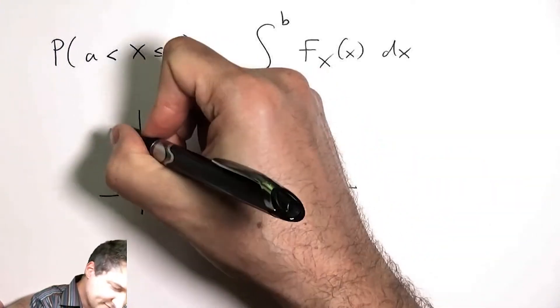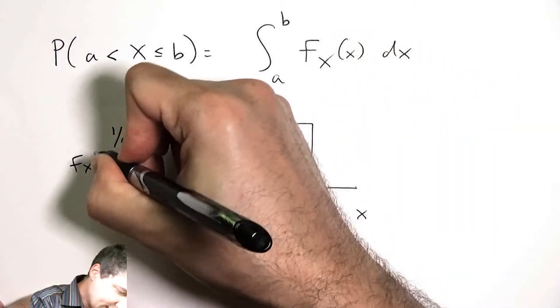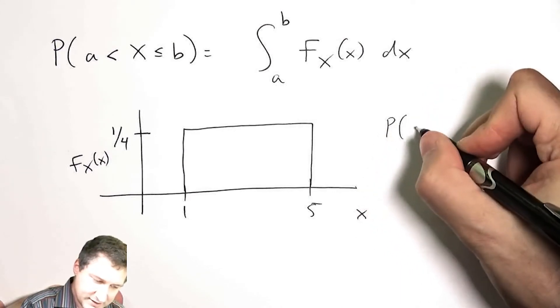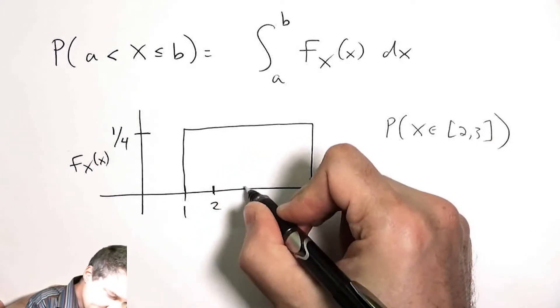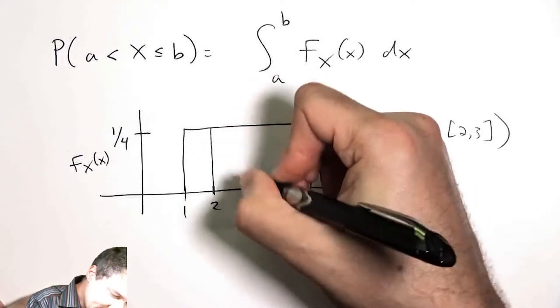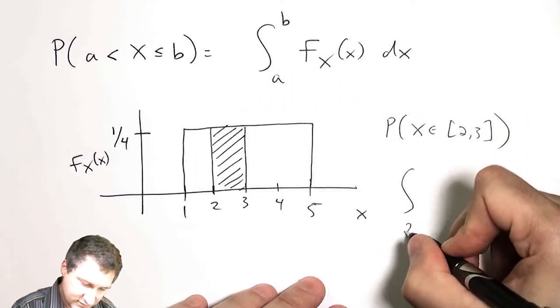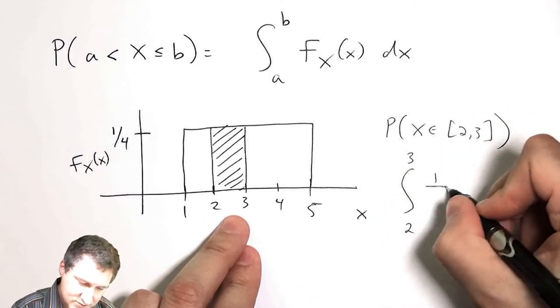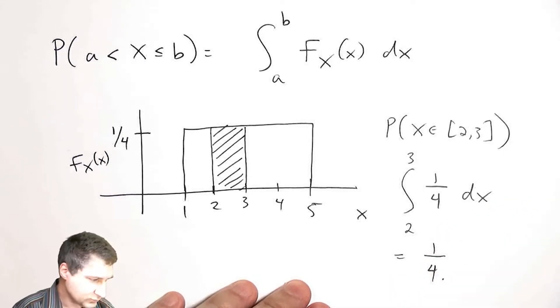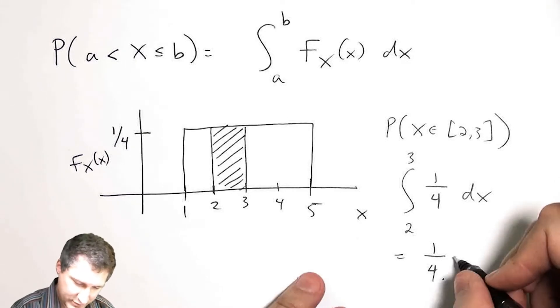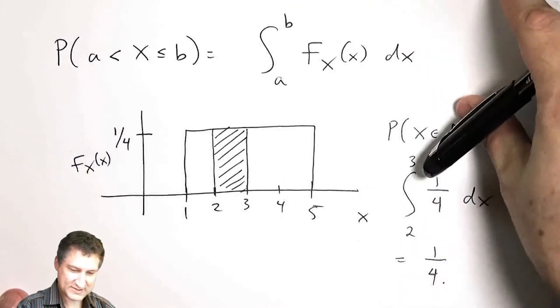For example, suppose I have a uniform random variable between 1 and 5. This is going to be the PDF. Now I ask, what is the probability that my random variable falls between 2 and 3? I would label 2 and 3, and it's taking the area under the PDF. That's the integral from 2 to 3 of the PDF, which is 1/4 dx, which is just equal to 1/4 in this case, 1/4 times (3-2).